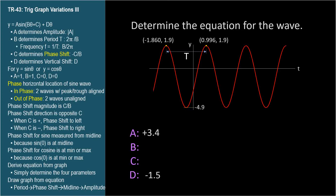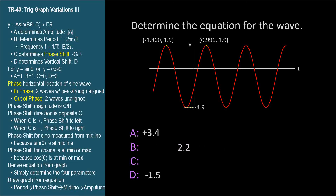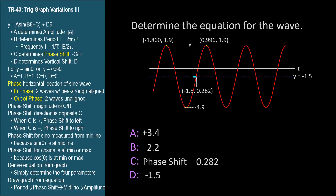We need to decide whether parameter a is positive or negative. It looks like we can use a sine function with just a small phase shift, so the direction is the same as sine, and a is positive 3.4. To find the b parameter, we need to first find the period T, the peak-to-peak distance: T equals 0.996 minus negative 1.860, which is 2.856. This period also equals 2 pi over b, so solving for b gives 2.2. To find c, we need the horizontal phase shift at the midline. That distance is 0.282, and the phase shift equals negative c over b, so solving for c yields negative 0.62.